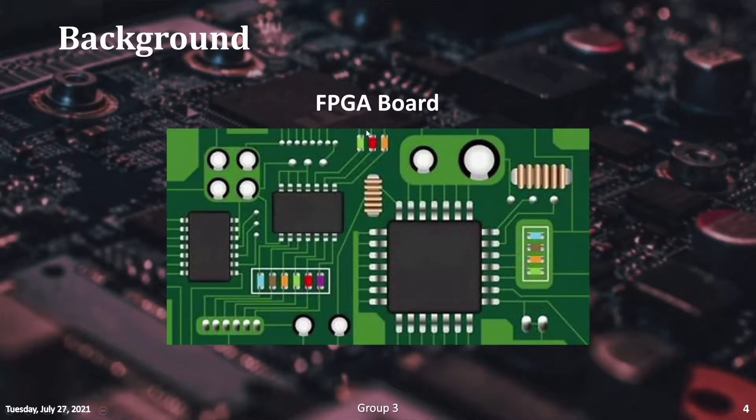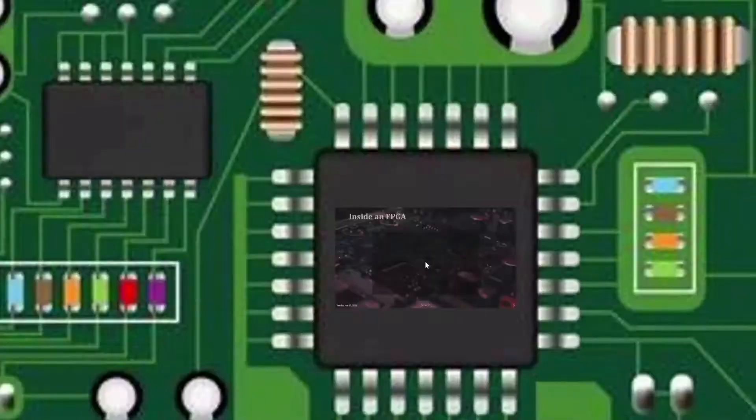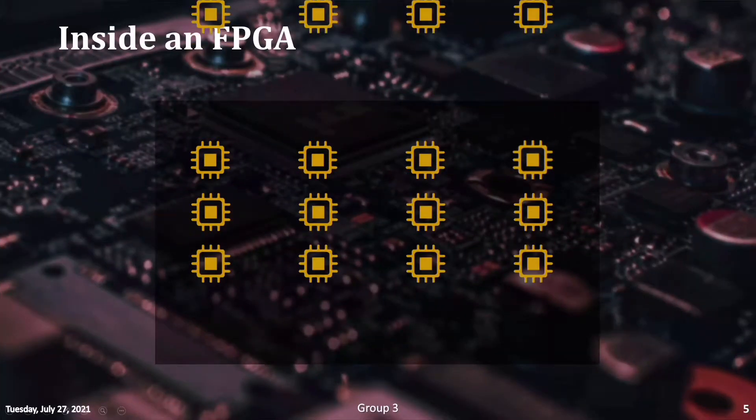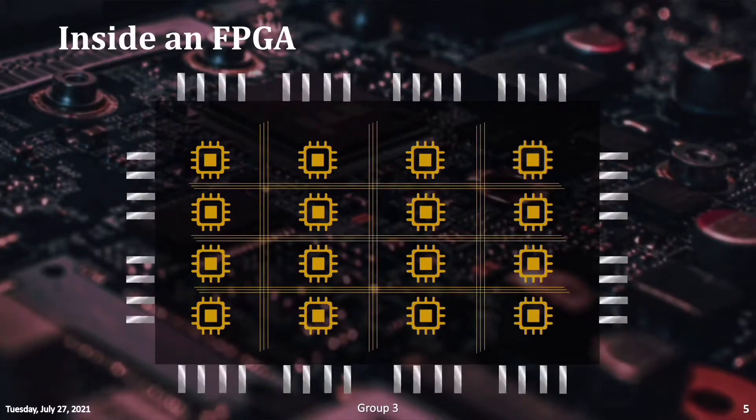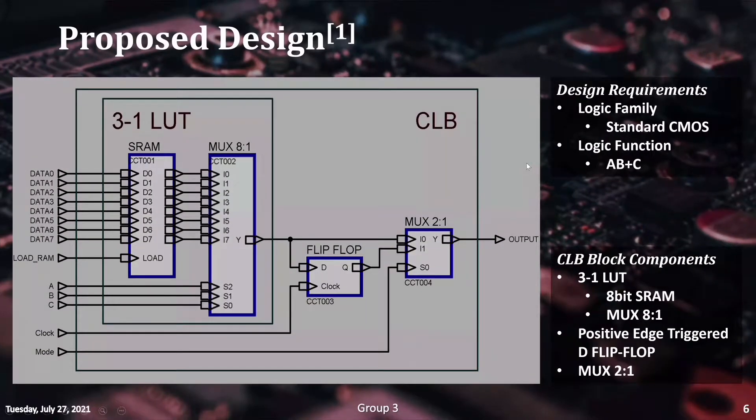Field programmable gate array or FPGAs are versatile devices that can implement any logic functions parallely. An FPGA chip consists of thousands of unit cells known as the configurable logic blocks or CLBs. These are the fundamental units of an FPGA chip that can be programmed externally. Our group has been tasked with the implementation of a CLB unit with 3 inputs and 1 output and the device has to be constructed using the CMOS logic family.